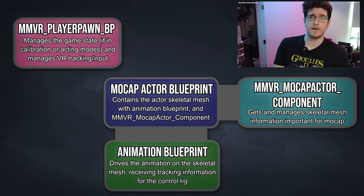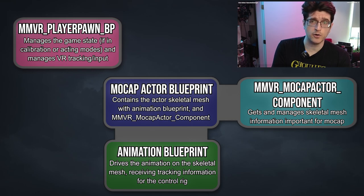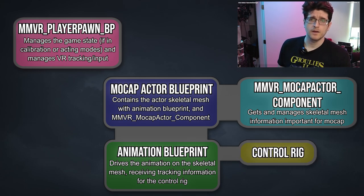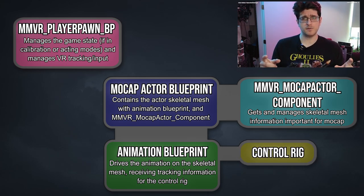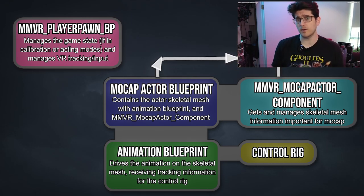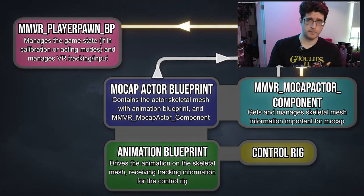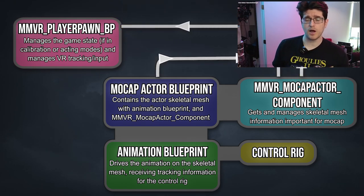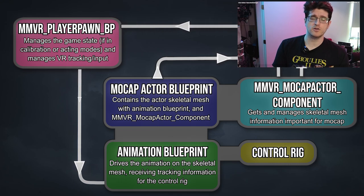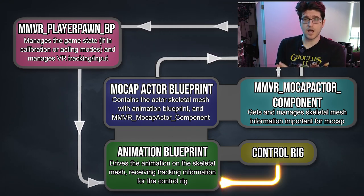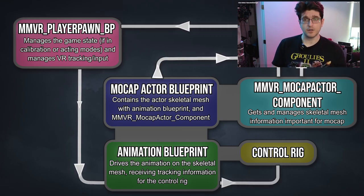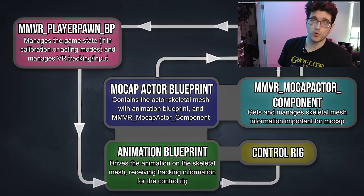Every skeletal mesh needs an animation blueprint to move around, and attached to that animation blueprint inside the anim graph is a control rig. The Mocap Actor component gets information about the skeletal mesh — how tall it is, what the bone names are — and sends that to the player pawn. The player pawn uses that to create some offsets on the trackers, and sends that tracking data to the animation blueprint, which feeds down into control rig. That's essentially the process we're going over today.